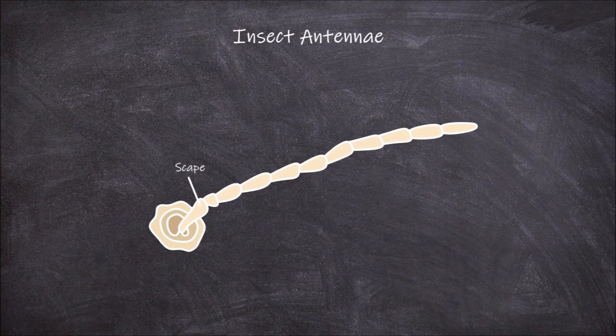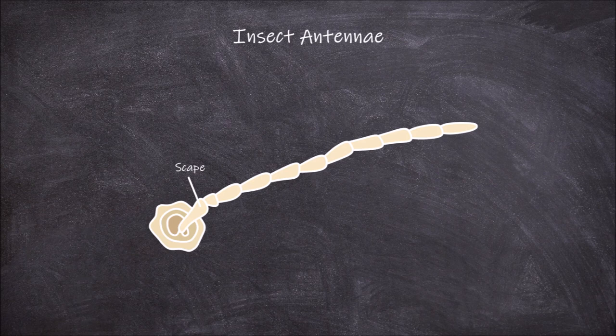The first part is the scape. The scape is located at the base of the antennae and attaches to the head of the insect.